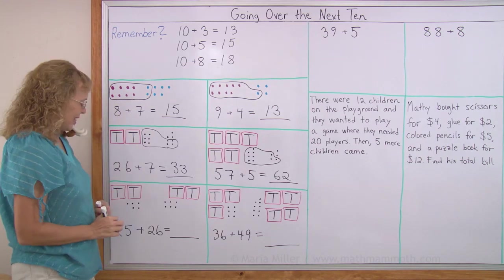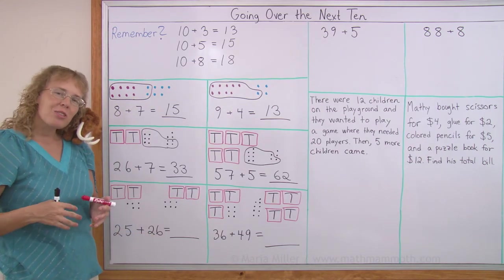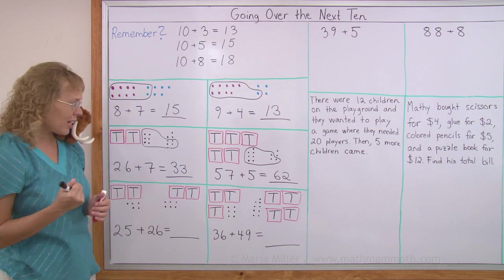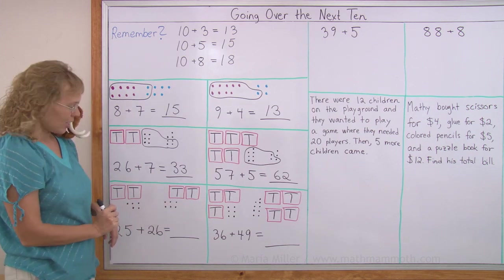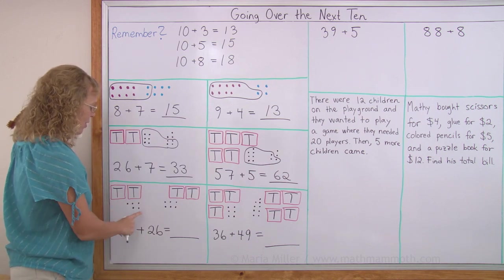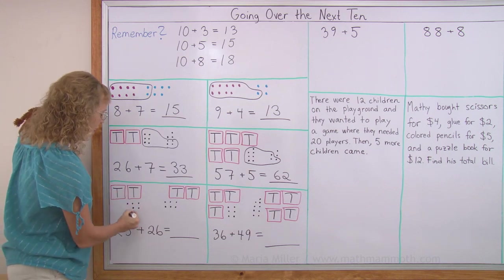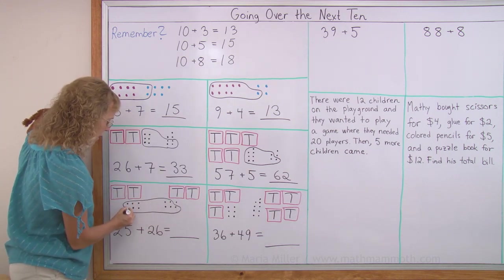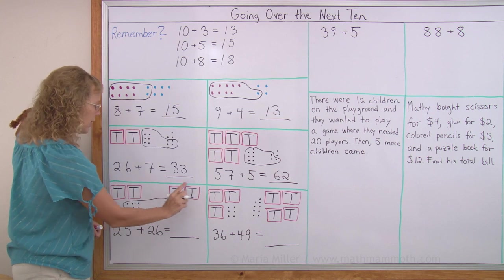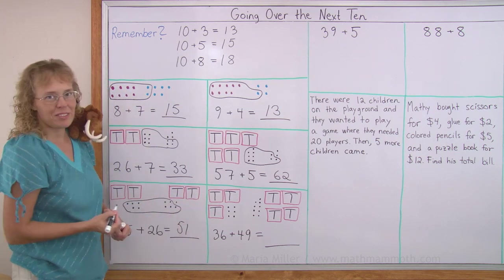2 more problems like this. Now I have 2 two-digit numbers and I can use the same idea of making a new 10 using this little dot here. 25 plus 26. 5 and 6, yeah, that's enough to make a new 10. I'll take 5 and 5. So I get 4 tens and a 5th 10 and 1. 5 tens and 1, 51.